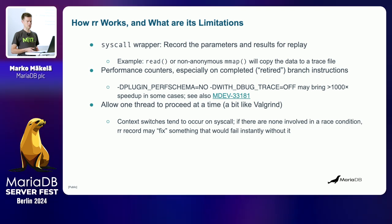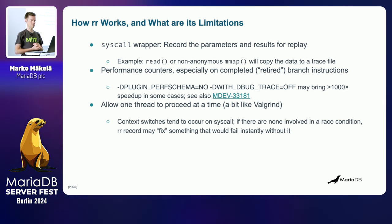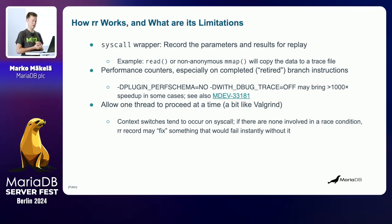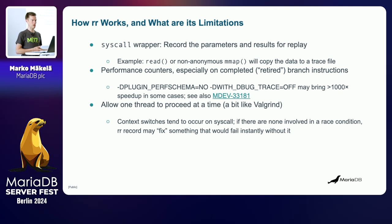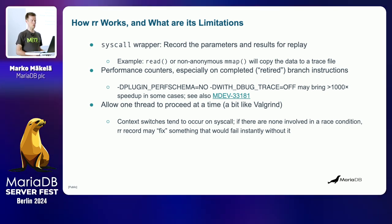I remember one case where without the options I have on the slides — disabling the performance schema and disabling the debug trace, which adds information on each function enter and exit — the test would fail in less than five seconds. I then checked how long it takes with those debug options and their conditional branches present: it took more than one or two hours. So there can be more than 1000x overhead in some extreme cases.